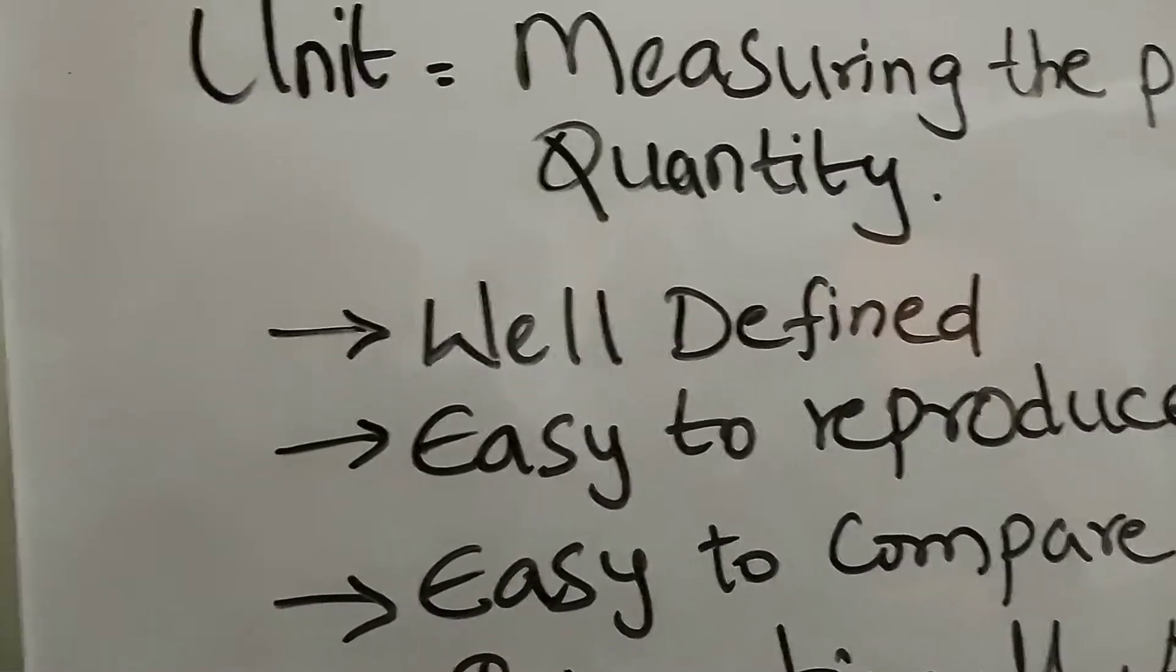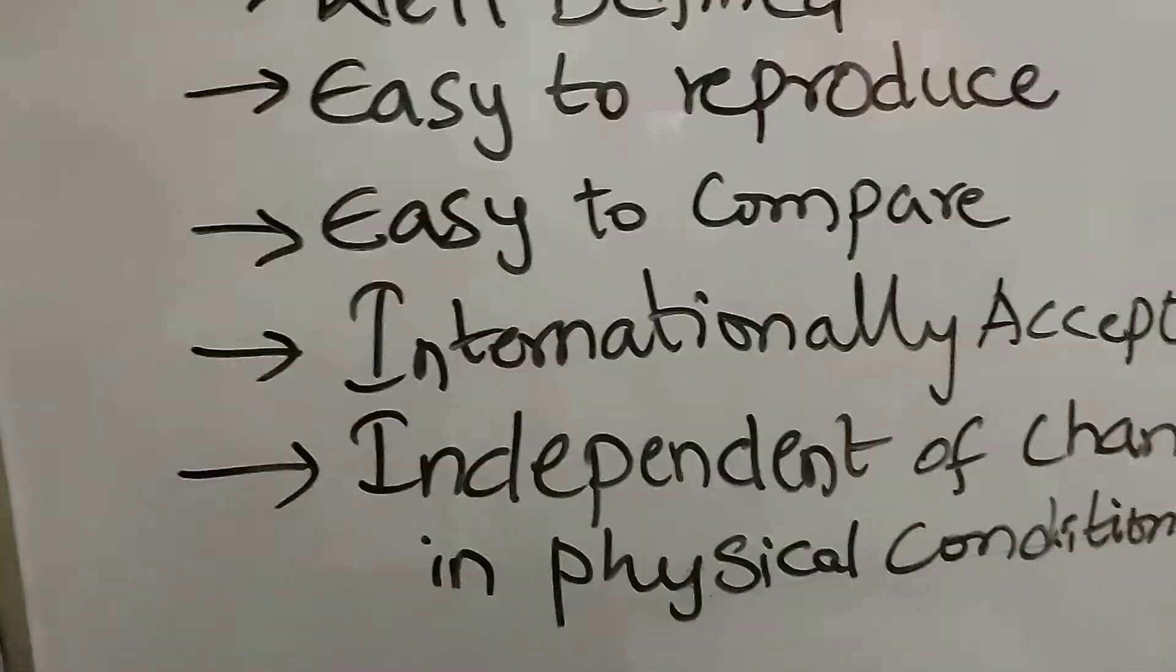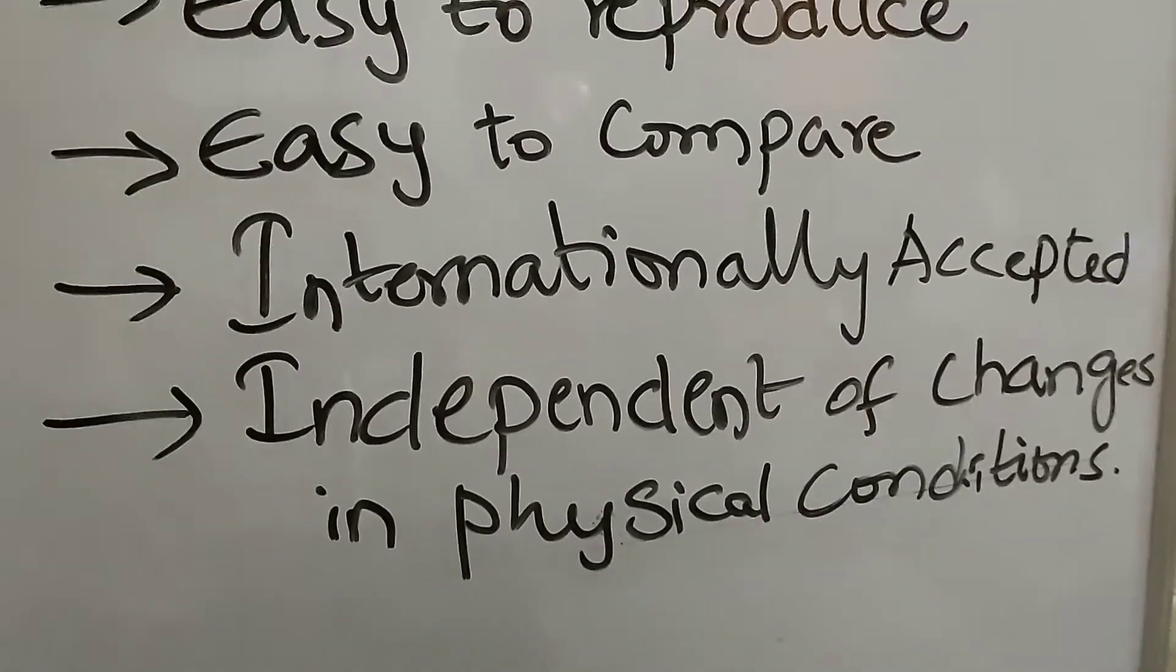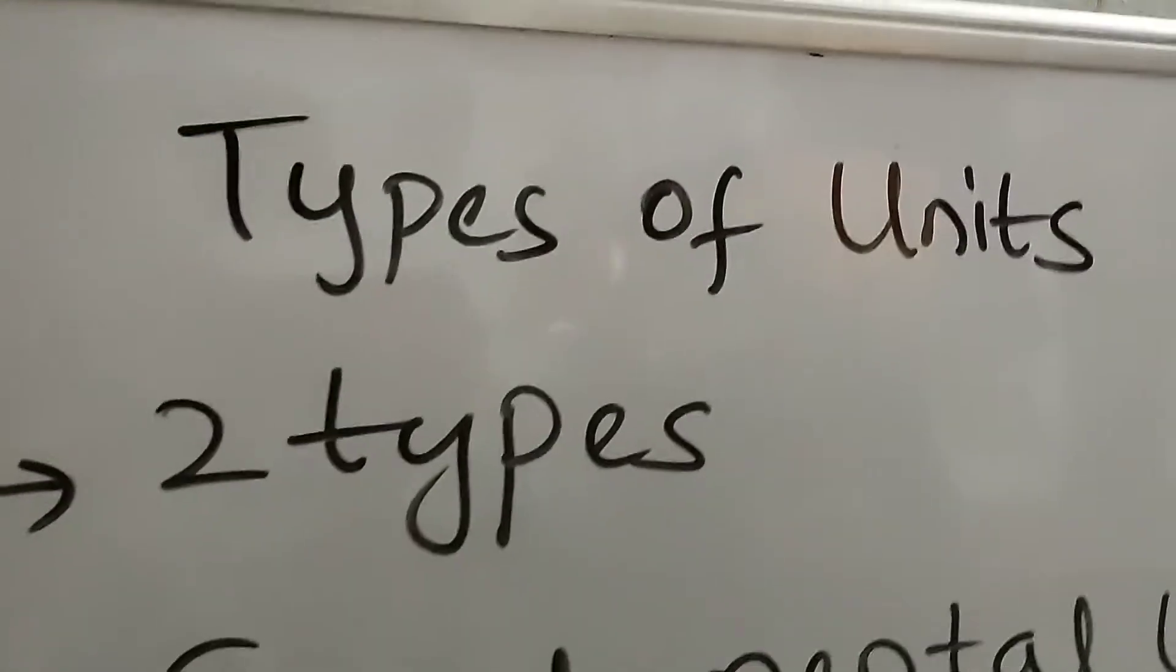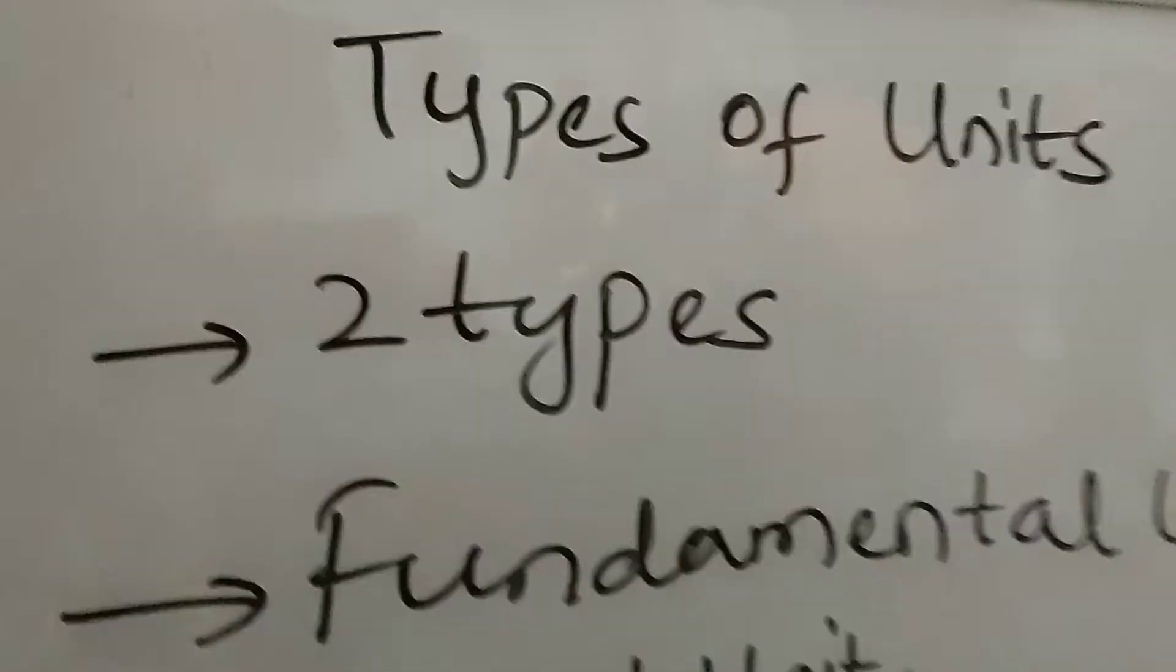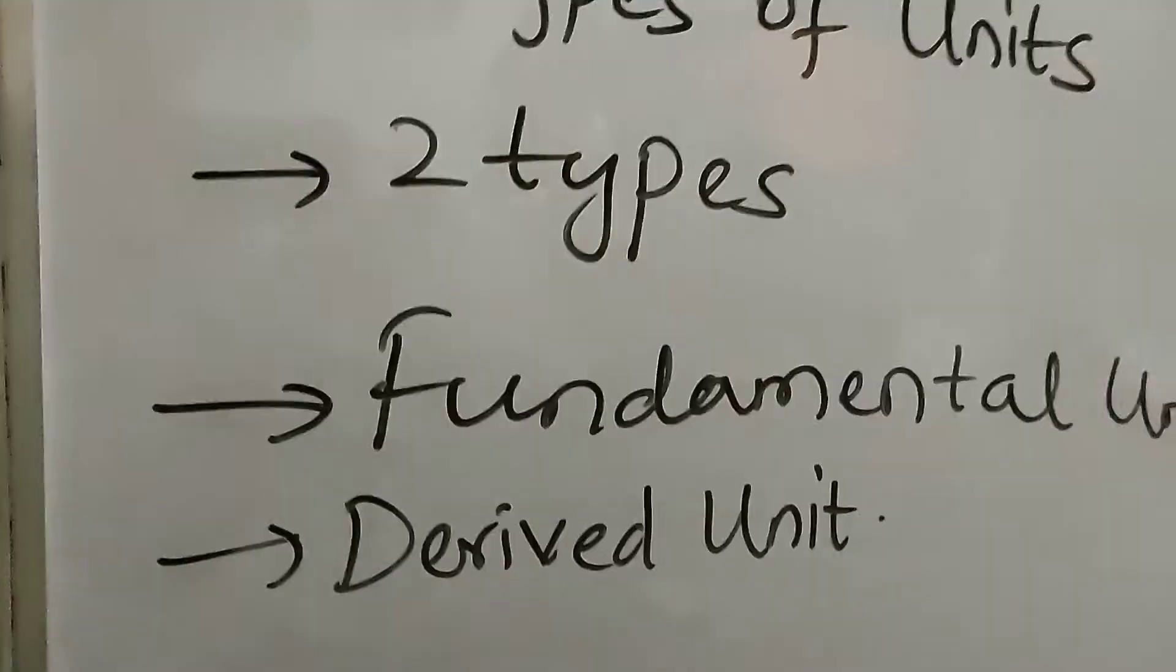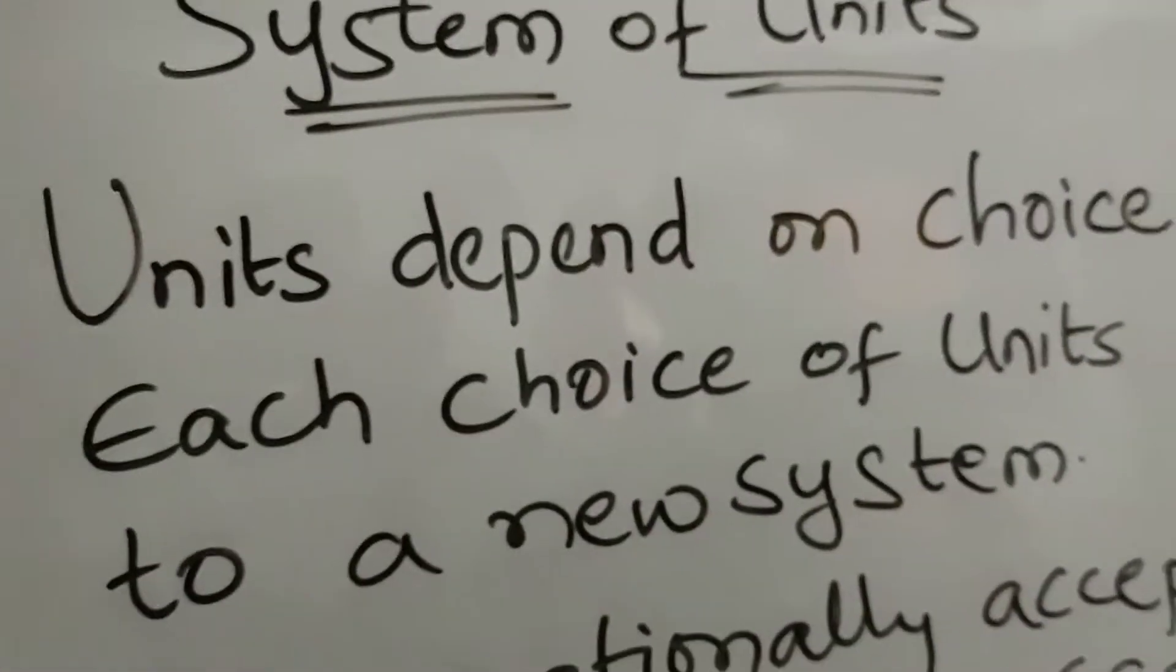is called a unit. A unit should always be well-defined, easy to reproduce, easy to compare, internationally accepted, and independent of change in physical conditions. There are two types of units: fundamental unit and derived unit.